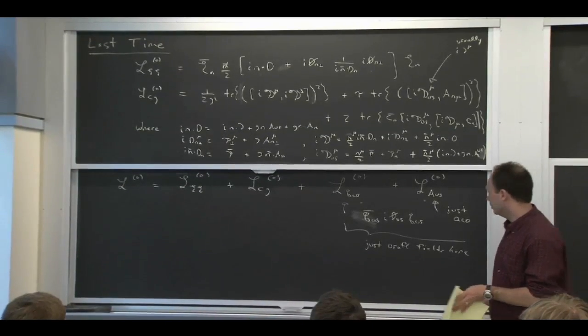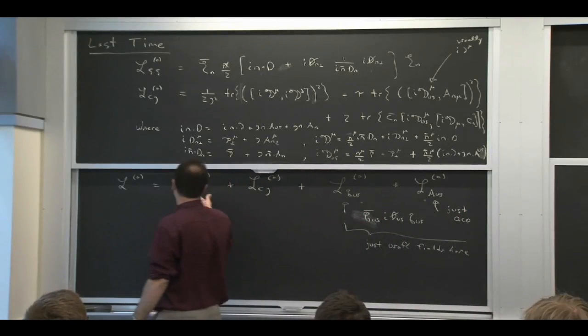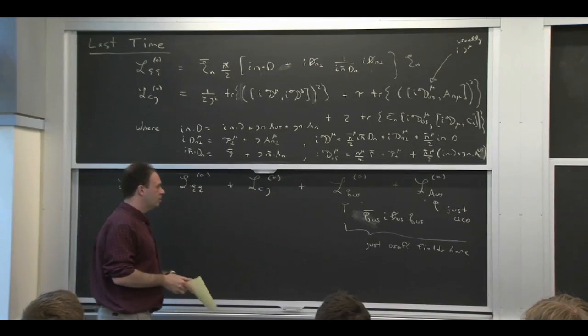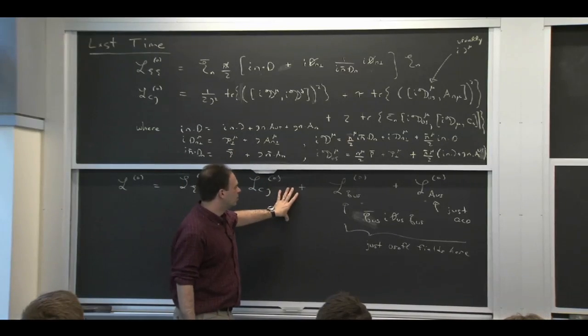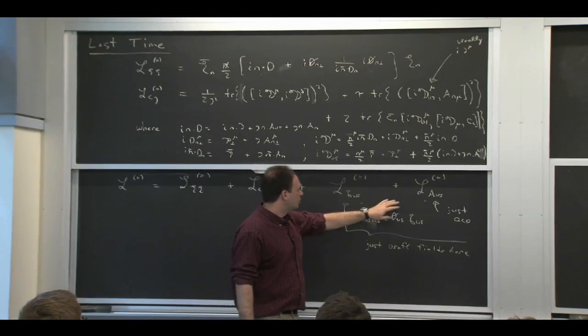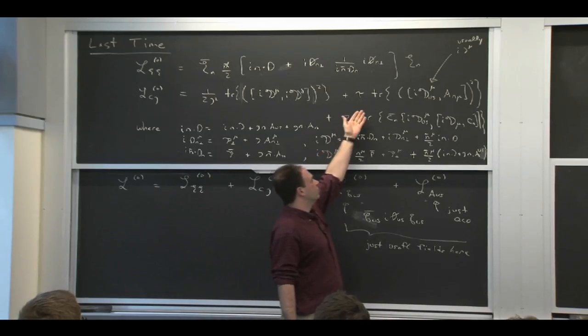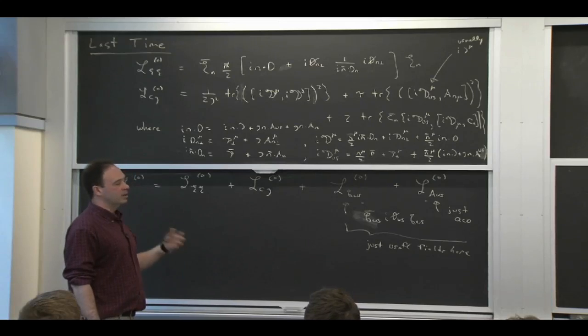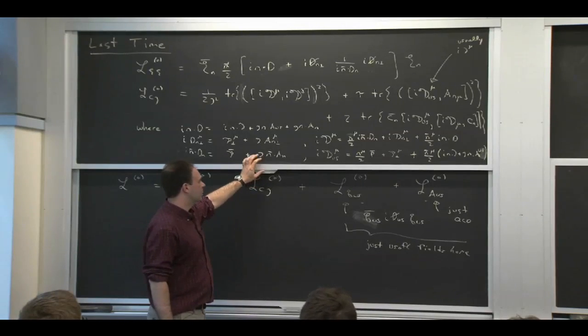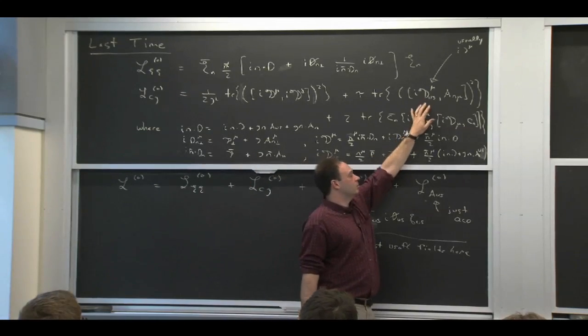We'll talk about the implications of that later on. But that's the leading order Lagrangian. This piece is pretty straightforward with this additional complication of worrying about what gauge symmetry means, which we'll talk more about later. We had to be careful not to break it when we introduced this term because we want to, in some sense, have a gauge fixing both for the collinear gluon and a separate gauge fixing for the ultrasoft gluon.